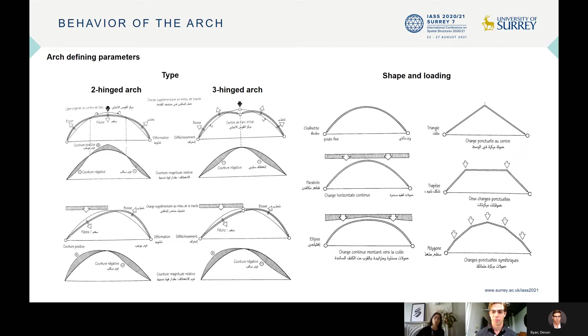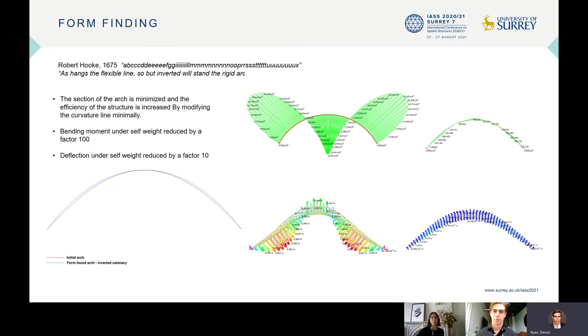Once we fixed all these parameters, we optimized the shape by finding the inverted catenary geometry with the method of the hanging chain. And by modifying slightly the curvature line initially drawn by the architect, we managed to greatly increase its structural efficiency.